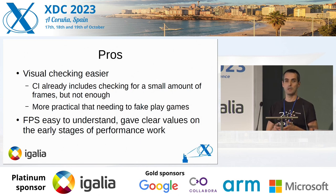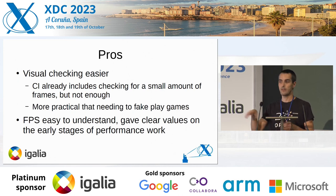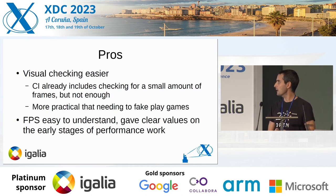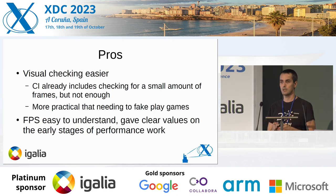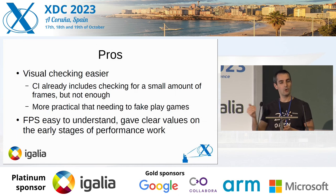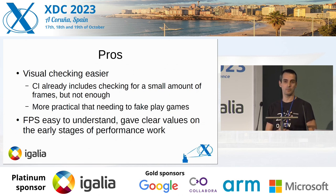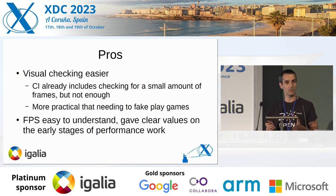Advantages: that made visual checking far easier, because the alternative was putting the sample and starting to fake-play the game, going through corridors, and that was boring. Also, in the CI — just in case someone is wondering — there are some cases of checking some frames and checking the outcome, but as I said, that was not enough, because sometimes you need to go into the corridor and the artifacts were not always in the same place. Also, the frames per second measurement was really accurate for understanding, and at the beginning of our performance work it was evident for some specific improvements to see a real improvement.